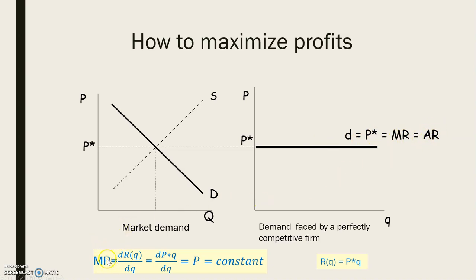If we compute the marginal revenue, we see that it is the derivative of revenues with respect to quantity. The revenues are price multiplied by Q. If we derive this with respect to Q, we find that the marginal revenue equals P. And since P is constant in perfect competition, it coincides exactly with this horizontal line. We can also check that the average revenue equals the price by dividing total revenue by Q — P times Q divided by Q — so P equals the average revenue, and all of these are equal.